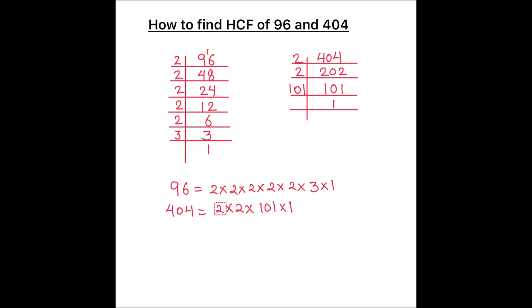Now to find the HCF of the two numbers, we are going to find the common factors between the two numbers. So let's circle the common factors. We see that 2 is a common factor between the two numbers, and there is another 2 which is common to both numbers. So to find the HCF, we are going to take the product of both these common factors, and we are going to take the product only once. So 2 times 2 is the HCF, which is 4.